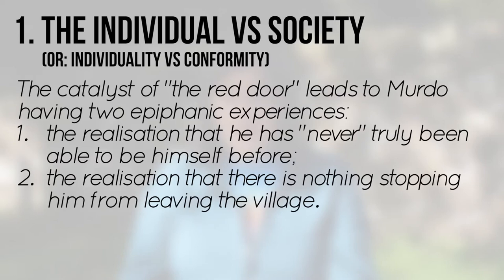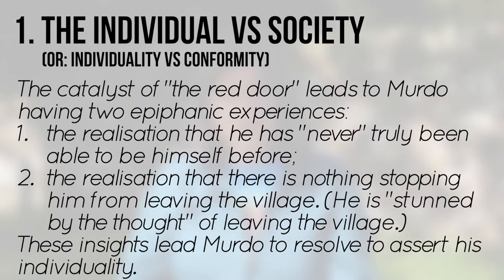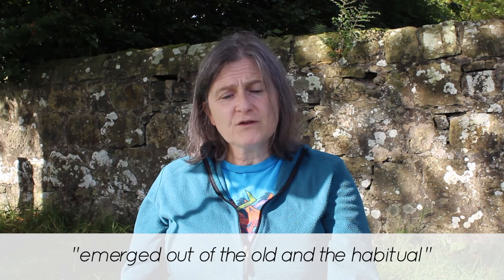Even though he is middle-aged, he is described as being stunned by the thought of leaving. This new insight triggers a significant change in Murdo's perspective on life, which results in him resolving to assert his individuality and defy the community's claustrophobic expectations. It is this decision that leads him to Mary's door by the end of the story, from where he looks back at his own door, described as having emerged out of the old and the habitual.